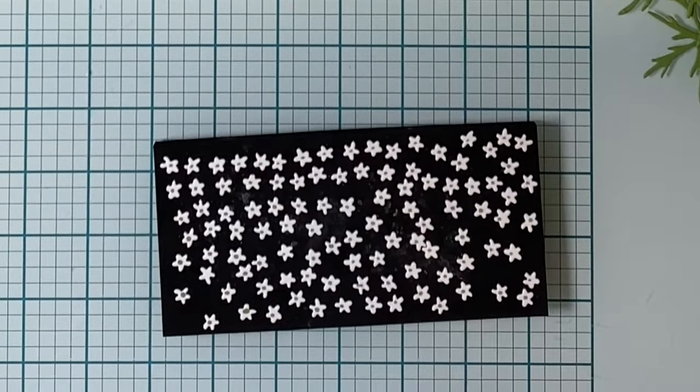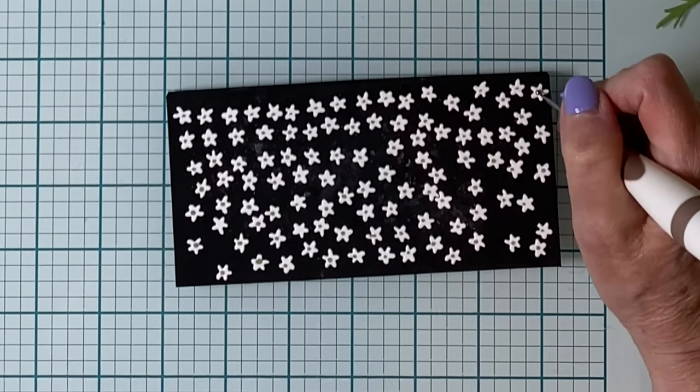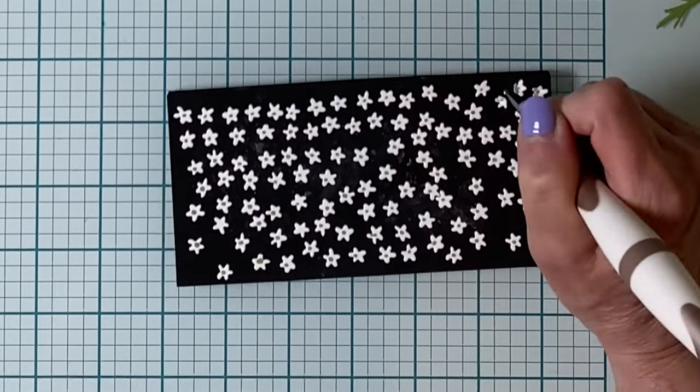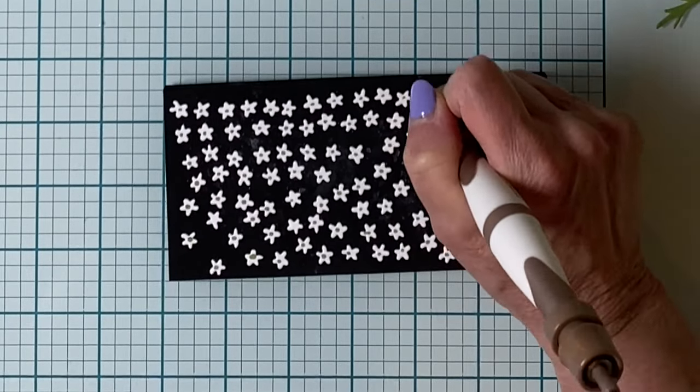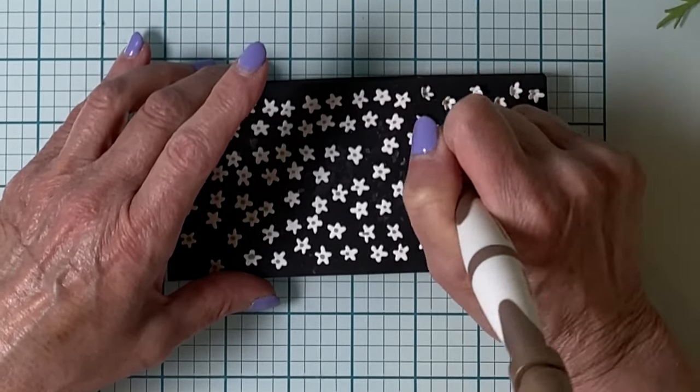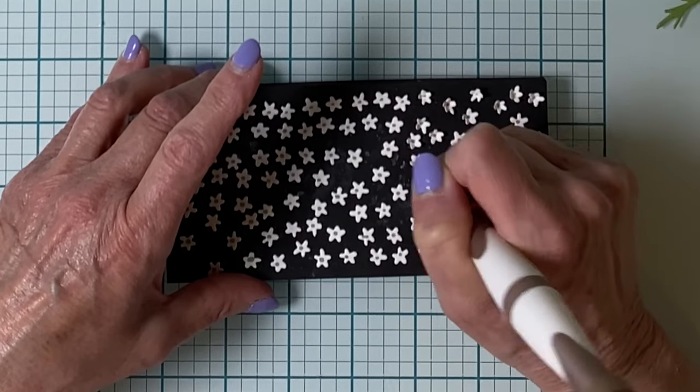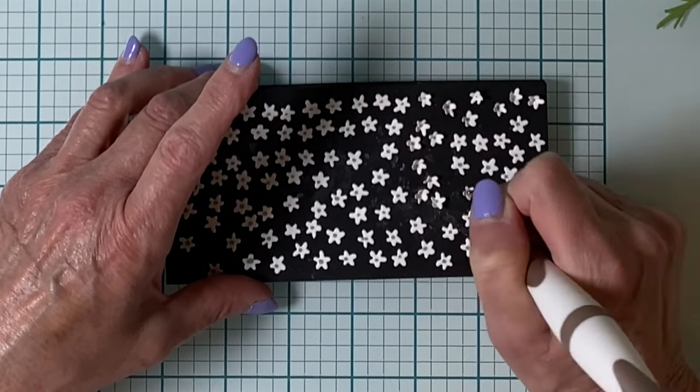These little flowers are easily shaped with the smallest ball tool. What I found to be the most time-consuming part was actually just laying these flowers out, getting the die cuts right side up on the foam shaping mat.